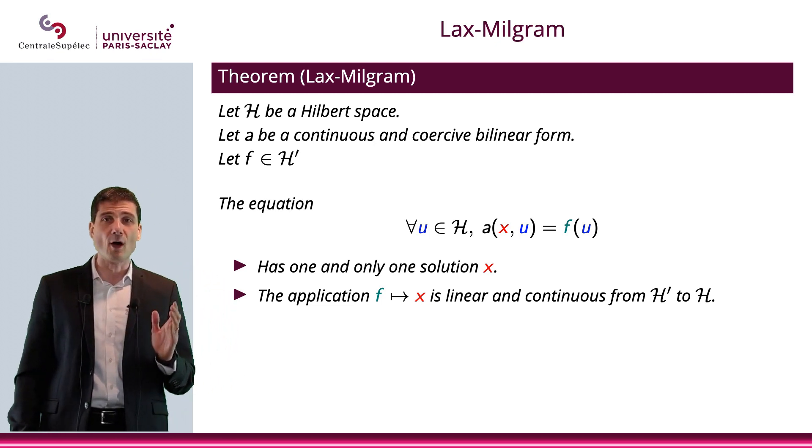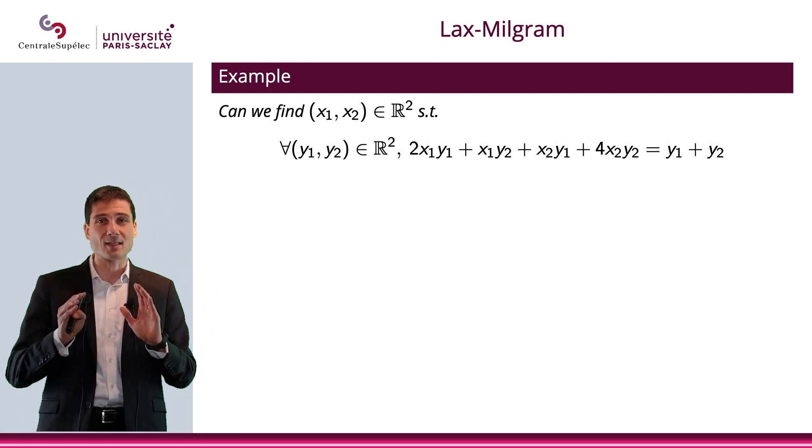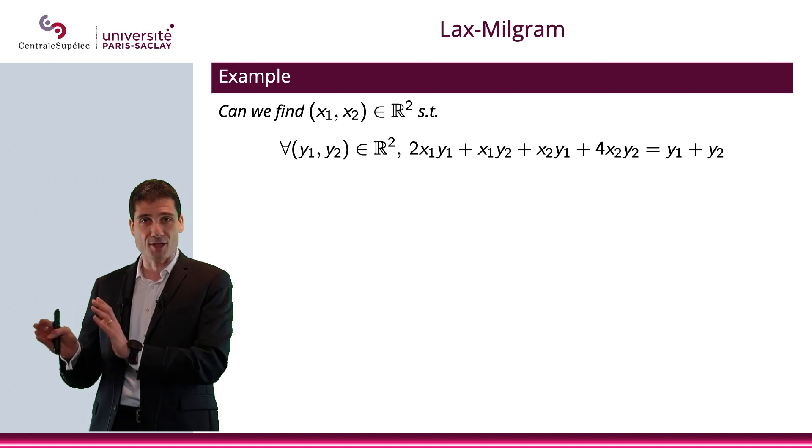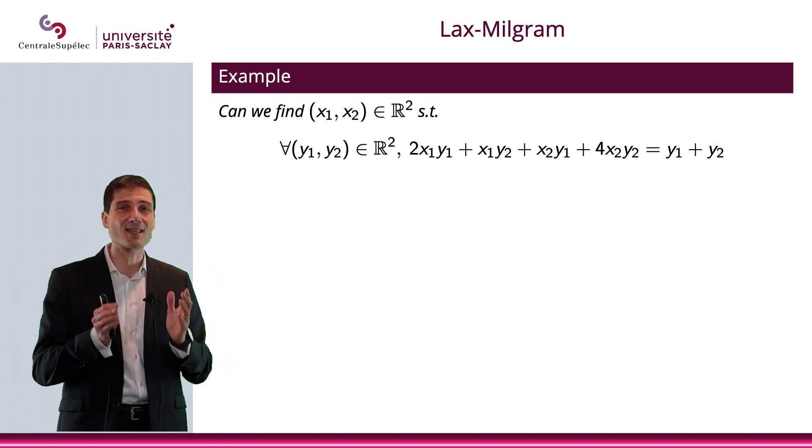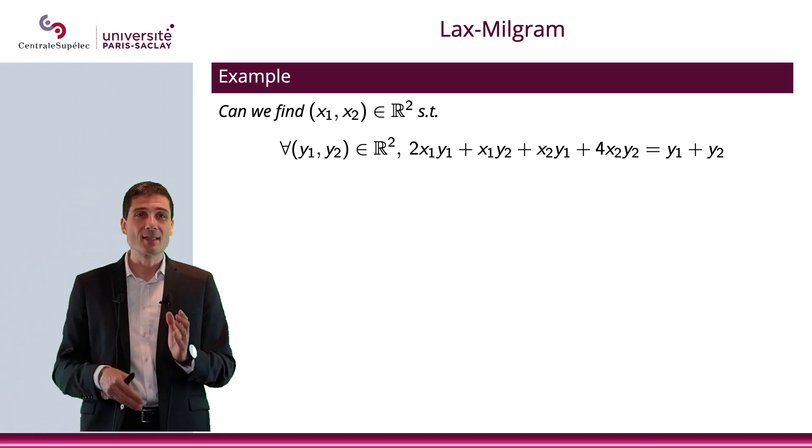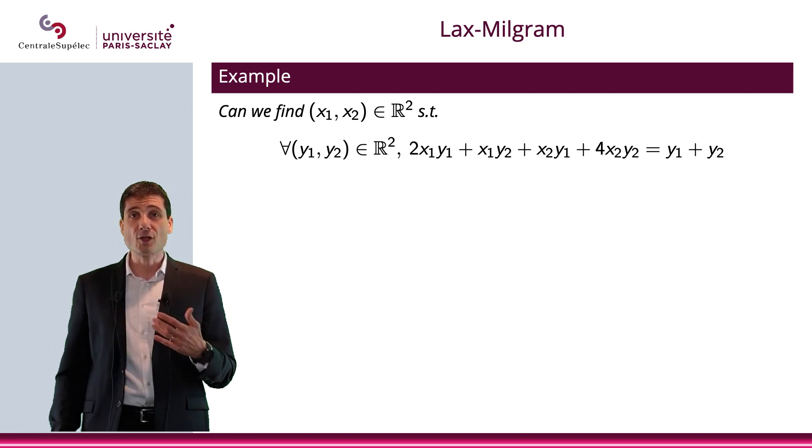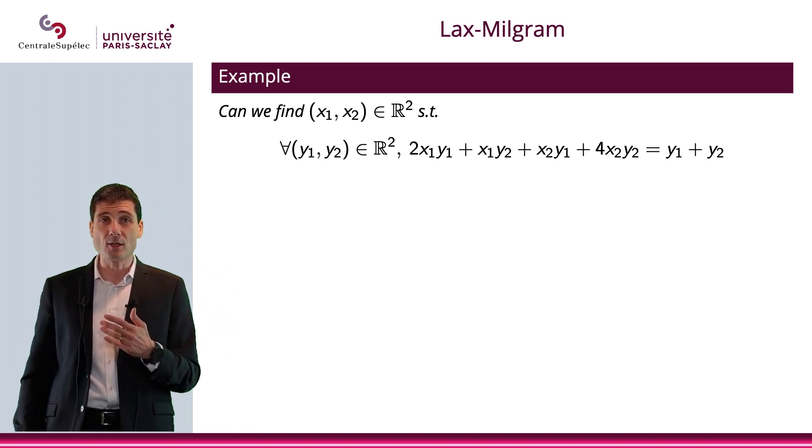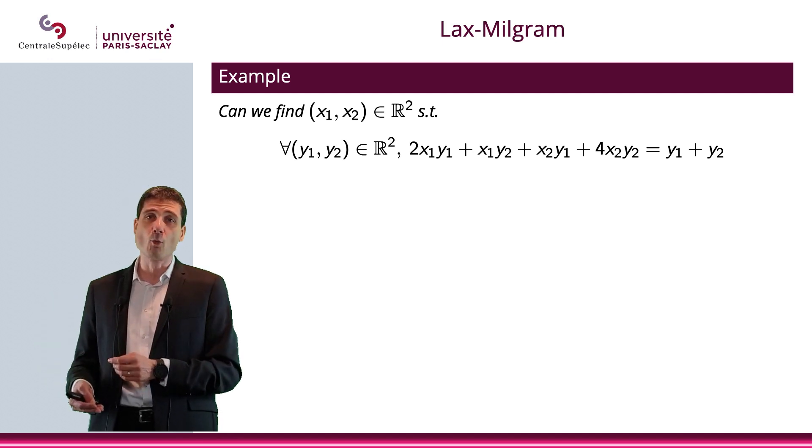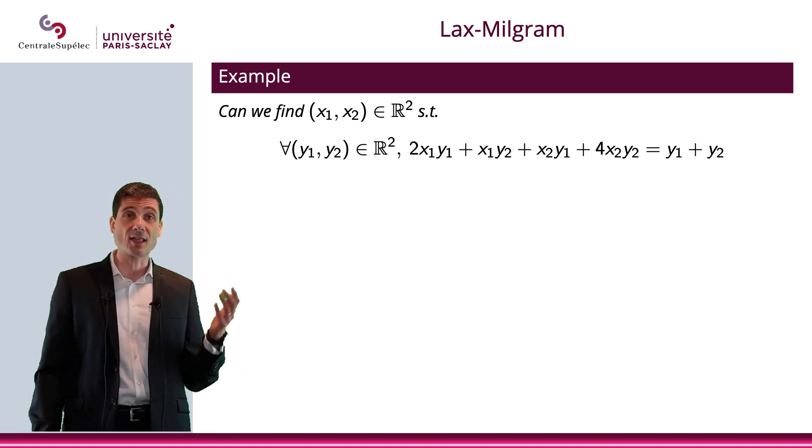Let me give you an example of application of this theorem. A very simple example, actually. It's even too simple. Be reassured. In the next video, we'll apply the Lax-Milgram theorem to something more serious. But I just wanted to show you how it works if you take that very simple Hilbert space H, which is R². So, the question is, can we find x₁ and x₂, a vector x in R², such that for all vectors y in R², y₁, y₂, we have this equation: 2x₁y₁ + x₁y₂ + x₂y₁ + 4x₂y₂ = y₁ + y₂. Can I find x₁ and x₂ such that this equation is satisfied?